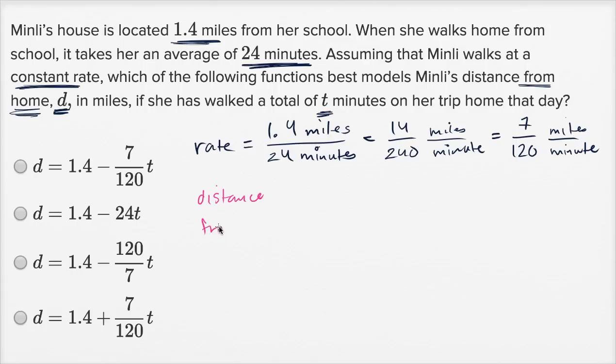Distance from school is just going to be her rate times t, times how much time has passed by. When time is zero, she's going to be at her school. As time increases in minutes, she's going to get further and further away from her school.